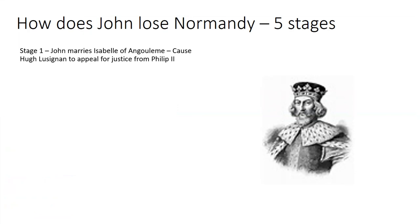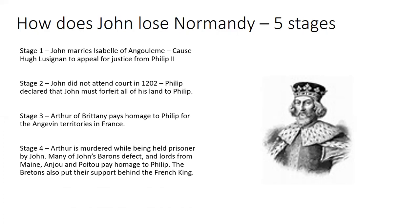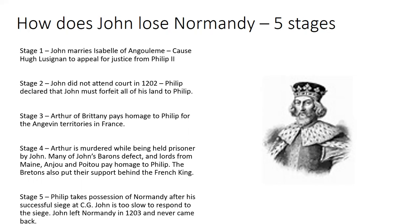To look at how John loses Normandy, we have five stages - this could be a very popular exam question. Stage one: John marries Isabella of Angoulême, causing the Lusignans to appeal for justice. Stage two: John doesn't attend court in 1202 and Philip declares John must forfeit all his land. Stage three: Arthur of Brittany pays homage to Philip for the Angevin territories. Stage four: Arthur is murdered while held prisoner by John; many of John's barons defect and lords in Anjou and Poitou pay homage to Philip. Stage five: Philip takes possession of Normandy after a successful siege at Château Gaillard, and John leaves Normandy in 1203 and never comes back.